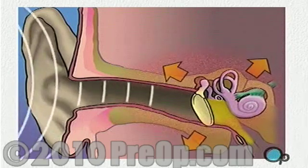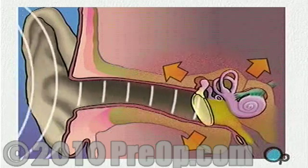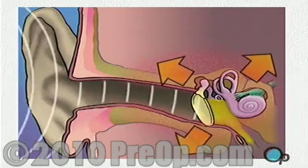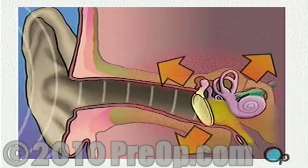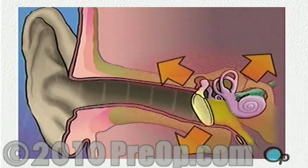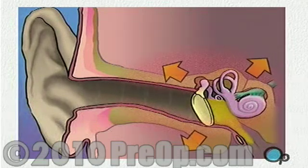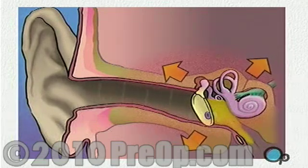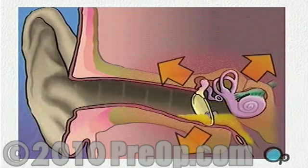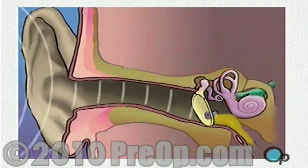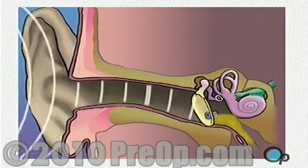If left untreated, the buildup of fluid can damage the delicate structures located behind the eardrum, leading to temporary or even permanent hearing loss. A myringotomy is a simple procedure in which a small tube is inserted into the eardrum in order to allow fluids to drain out of the middle ear, reducing pressure and allowing any infection to be treated with antibiotics.